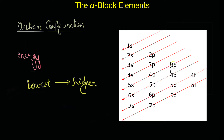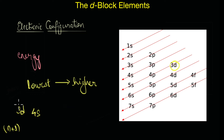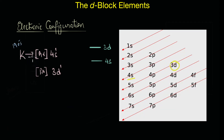In the first series of the d-block elements, the filling of the 3d orbitals takes place. But comparing 3d with the 4s subshell, the one with a higher n+l value has greater energy. The n+l value of 3d is 5, whereas that of 4s is 4, so 3d is higher in energy than 4s. Therefore, the 4s subshell fills first, followed by 3d. For example, potassium with 19 electrons has the configuration [Ar]4s¹ and not [Ar]3d¹.